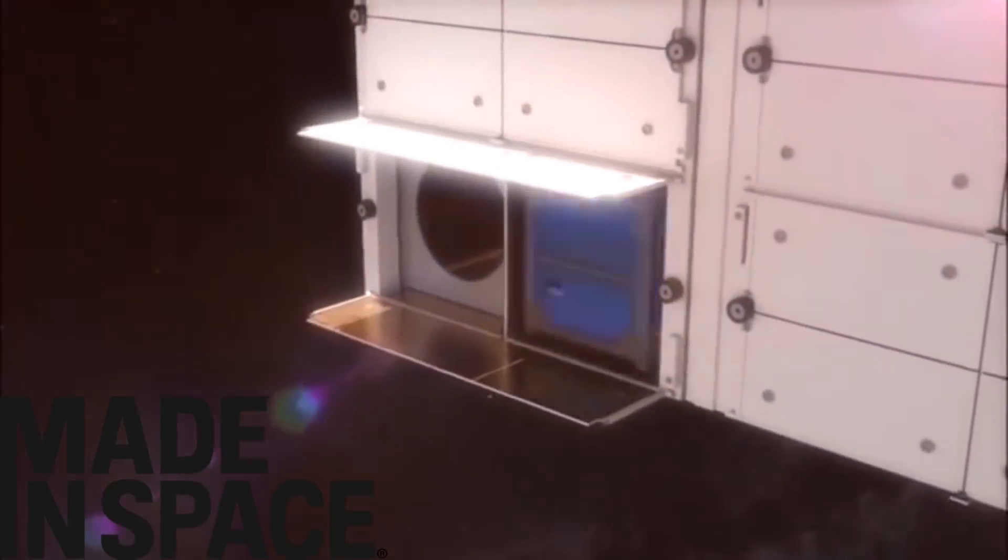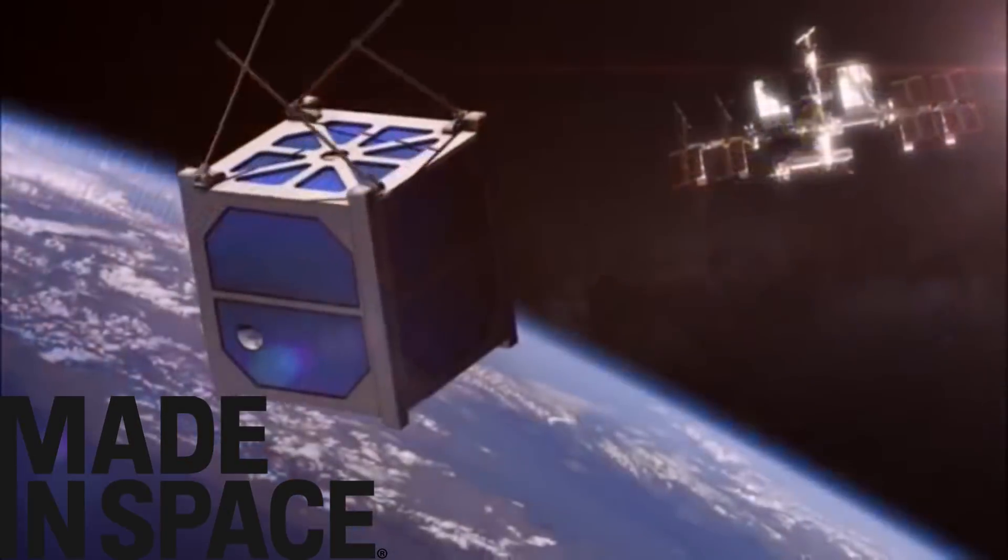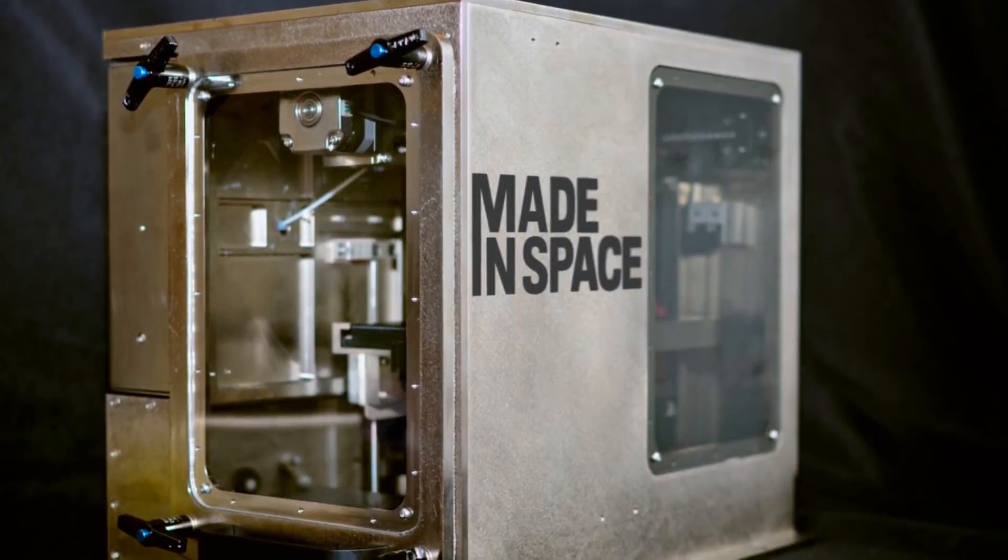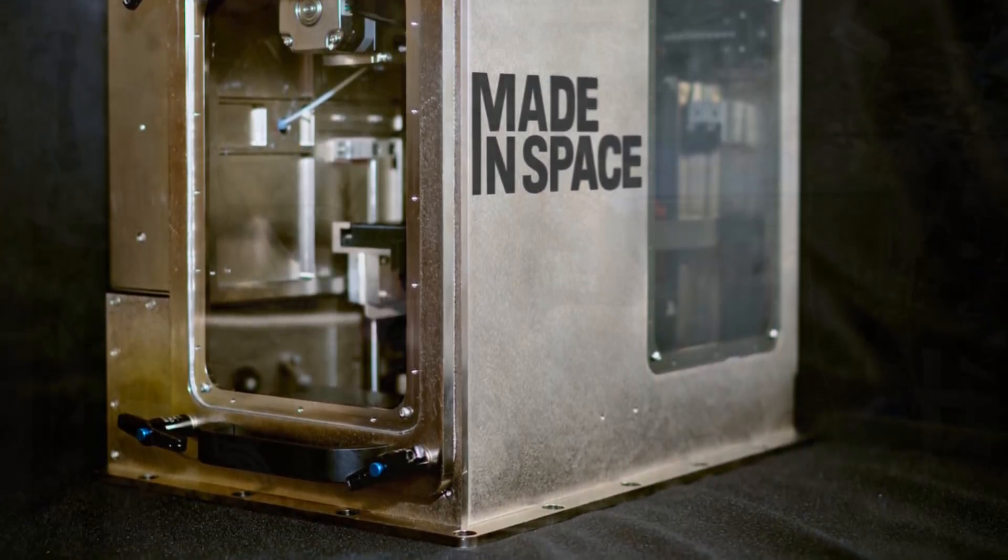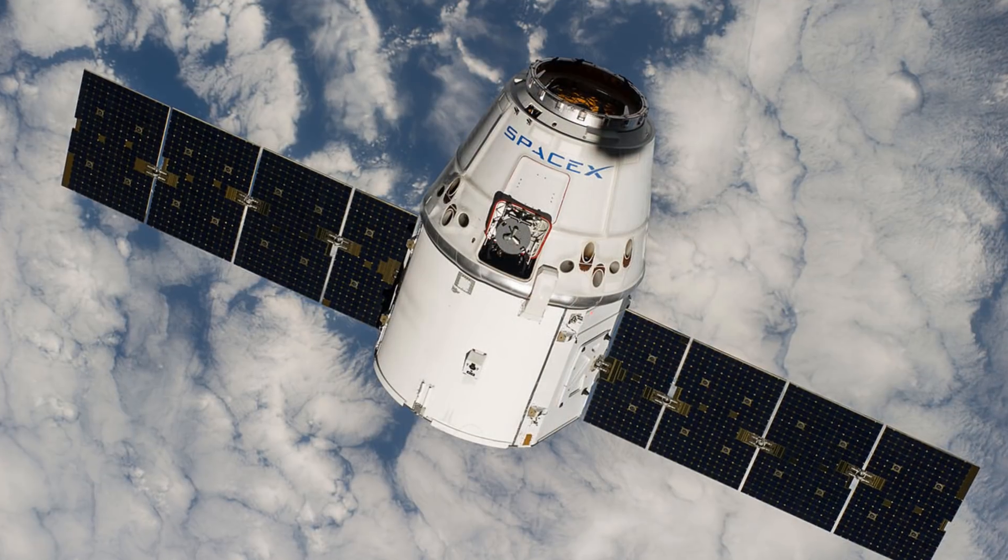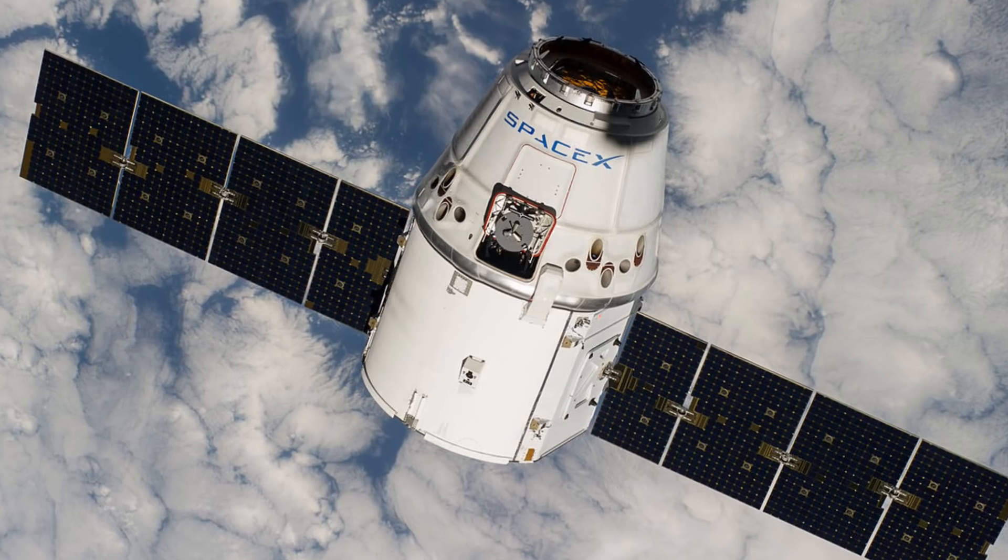From 2011 through 2014, MIS was awarded a number of small business innovation research grants from NASA for the purpose of designing a 3D printer to be tested on the International Space Station, the ISS. They developed the zero-G printer which was delivered to the ISS onboard SpaceX commercial resupply mission 4 on September 23rd, 2014.